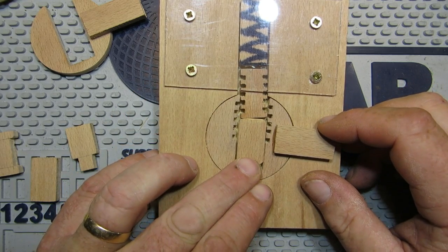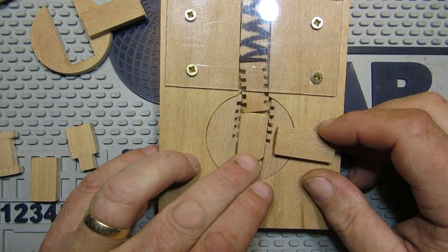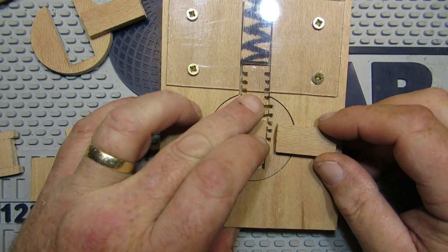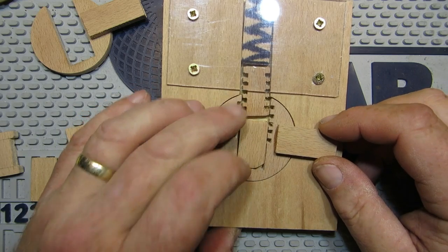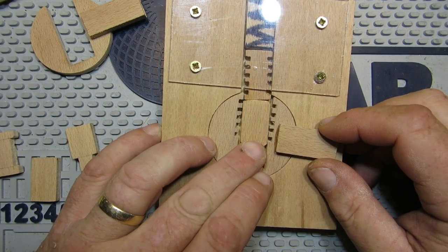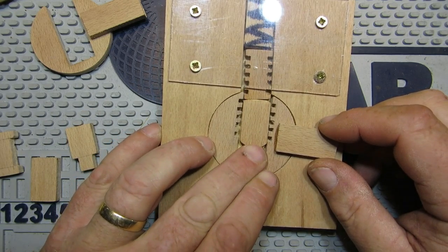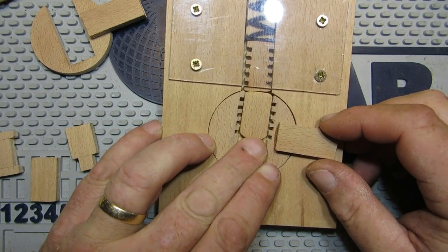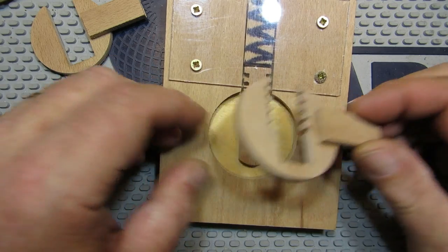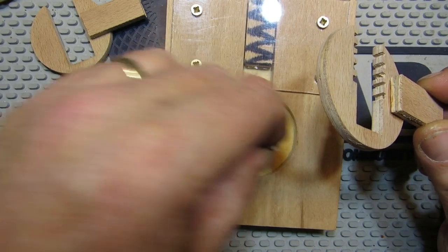We can see it's actually, the serrations actually interact with the thread and actually make it harder to get the key pin up and get it picked.